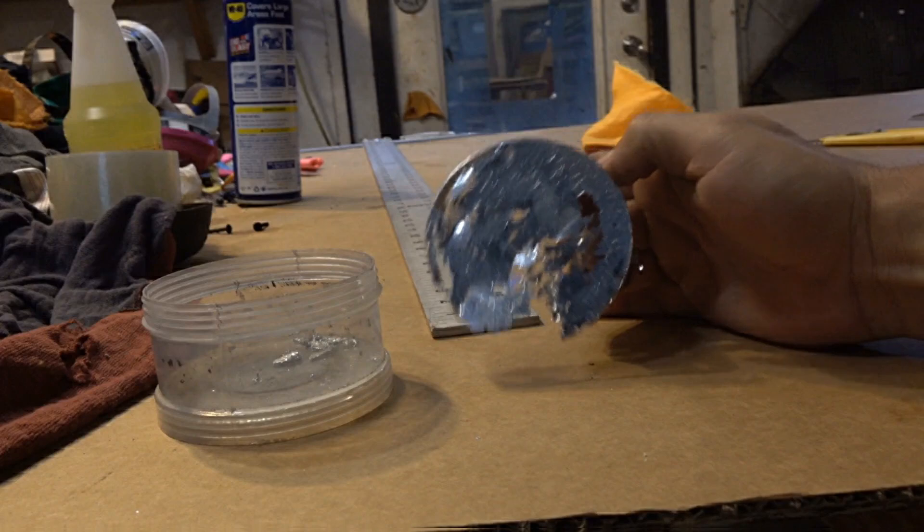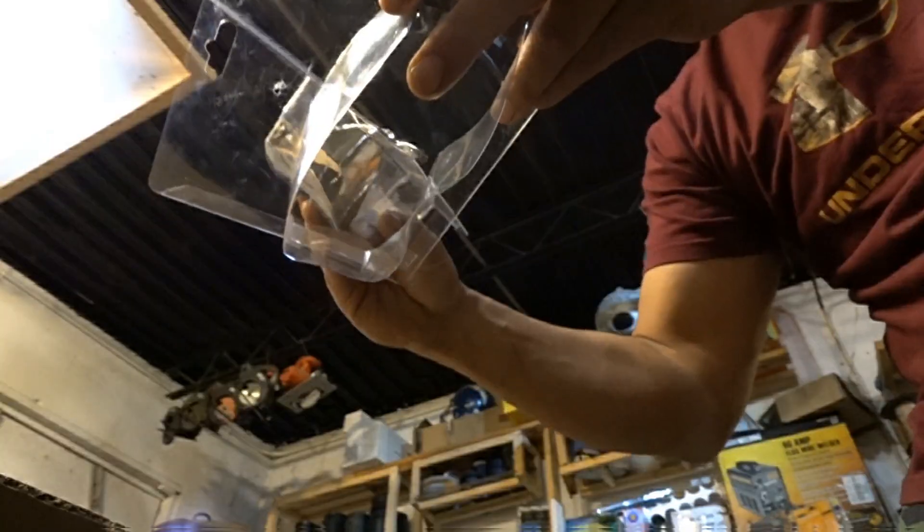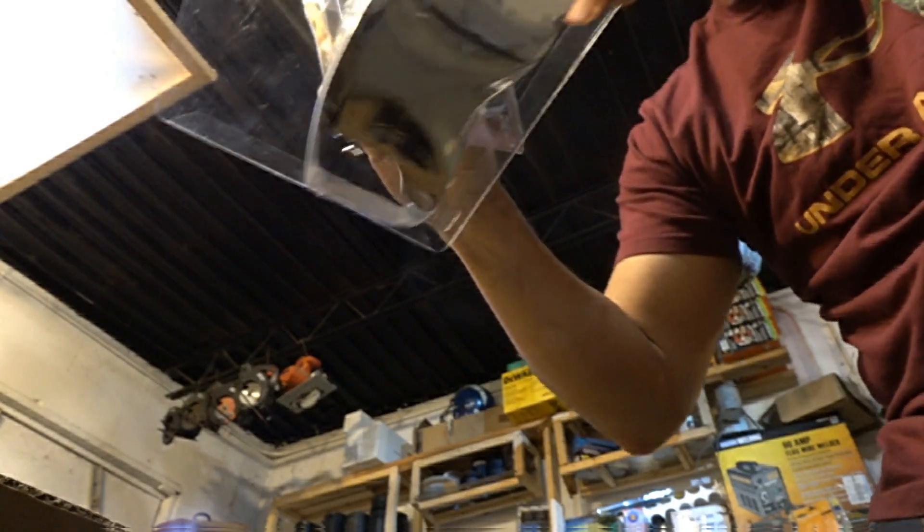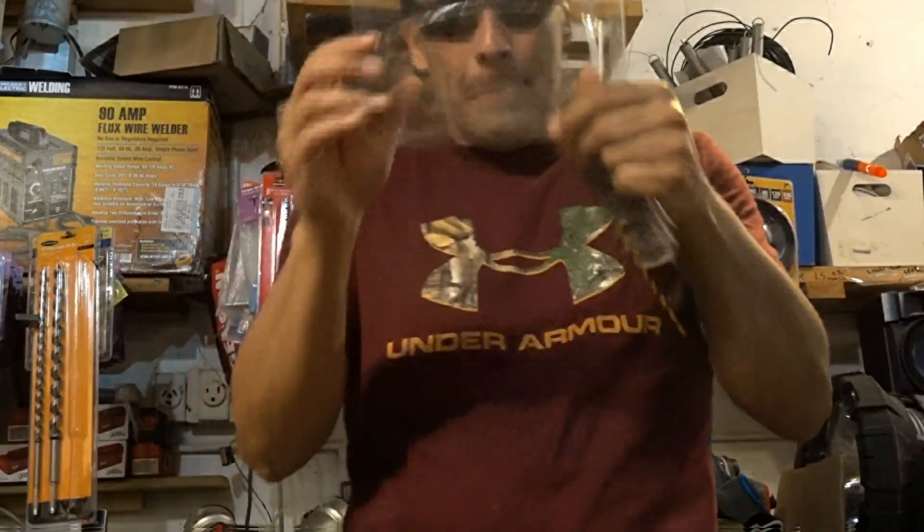If you want a mirrored surface when gallium hardens you can forget about buffing it because gallium is way too soft. For a true mirrored surface the gallium must be poured into a form that has an ultra smooth surface like this blister packaging for safety goggles.